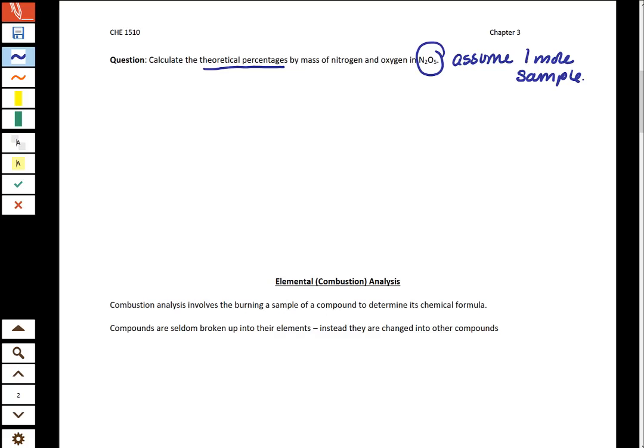And that way if we assume that we have a one mole sample, the molar mass of N2O5 ends up being the sample mass. And then what we need to do is calculate how much nitrogen is in N2O5 by mass and how much oxygen.